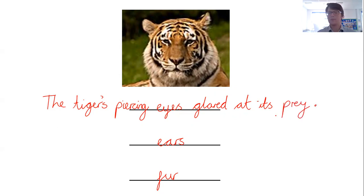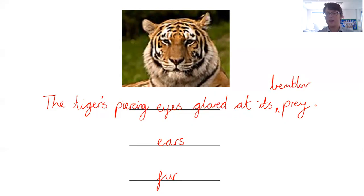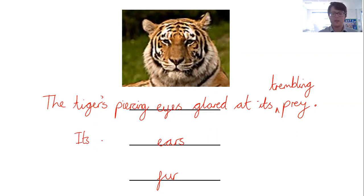Full stop. And reading this back: 'the tiger's piercing eyes glared at its prey.' Could I describe prey a little more? I'm going to insert a word — at its trembling prey. I want to show the prey is really scared.